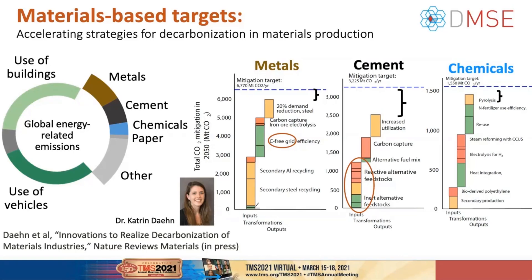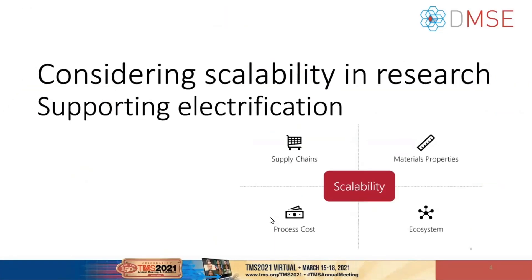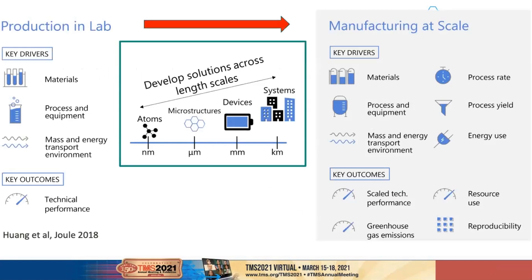What I'm going to do today is highlight two threads related to research in my group, and in particular try to highlight some of that complexity I talked about in the beginning. The first thing I want to mention is scalability in research and how that helps us support electrification. We think about scalability along four axes, and the example I'm going to show is related to material supply chains but also linking materials properties to process cost.